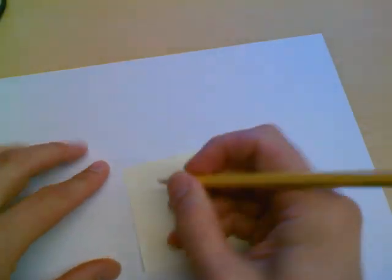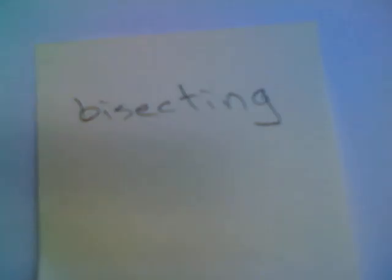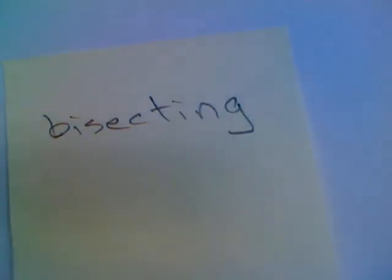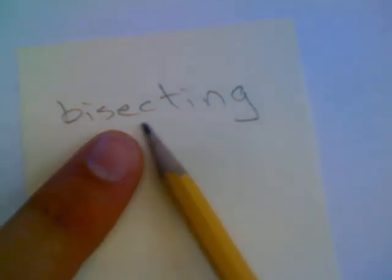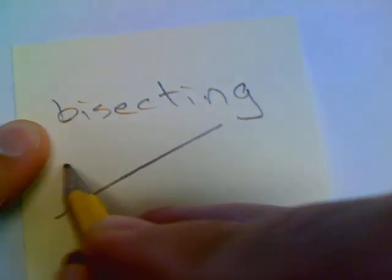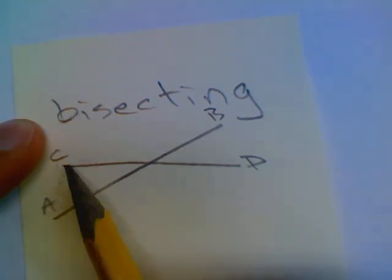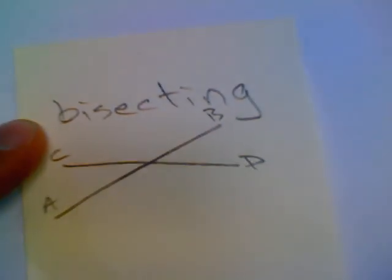This is a video lesson for grade seven, section 8.3, talking about bisecting lines. Let's dissect this word: 'bi' means split into two, like a bicycle has two wheels. 'Sect' means section, to split. So if I have a line AB and a line CD, I can say that line CD is bisecting line AB.